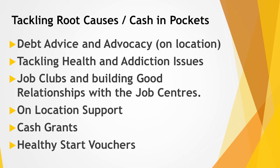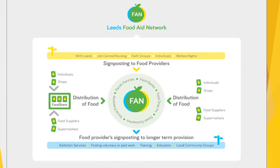Here's a little diagram. What you can see is we want to see collaboration and connection. In the middle you've got different forms of food aid provision — food pantries, food banks, drop-ins, street outreaches, and social enterprises. We want to see people signposting effectively — from the NHS, job centre, housing, faith groups, individuals, and welfare rights — signposting effectively to these provisions. We then want to see people signposted on to deal with addiction issues, find work, get training and education, get connected with local community groups.